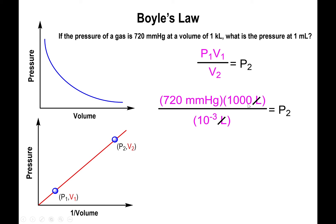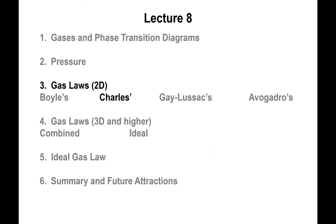720 times 1000 divided by 10 to the negative 3 gives you a ridiculously high pressure of 7.2 times 10 to the 8 millimeters of mercury. That pressure is probably way too high to be held in most any container, so this is totally hypothetical. You probably might not be able to do such a drastic change in volume. But that's Boyle's Law.